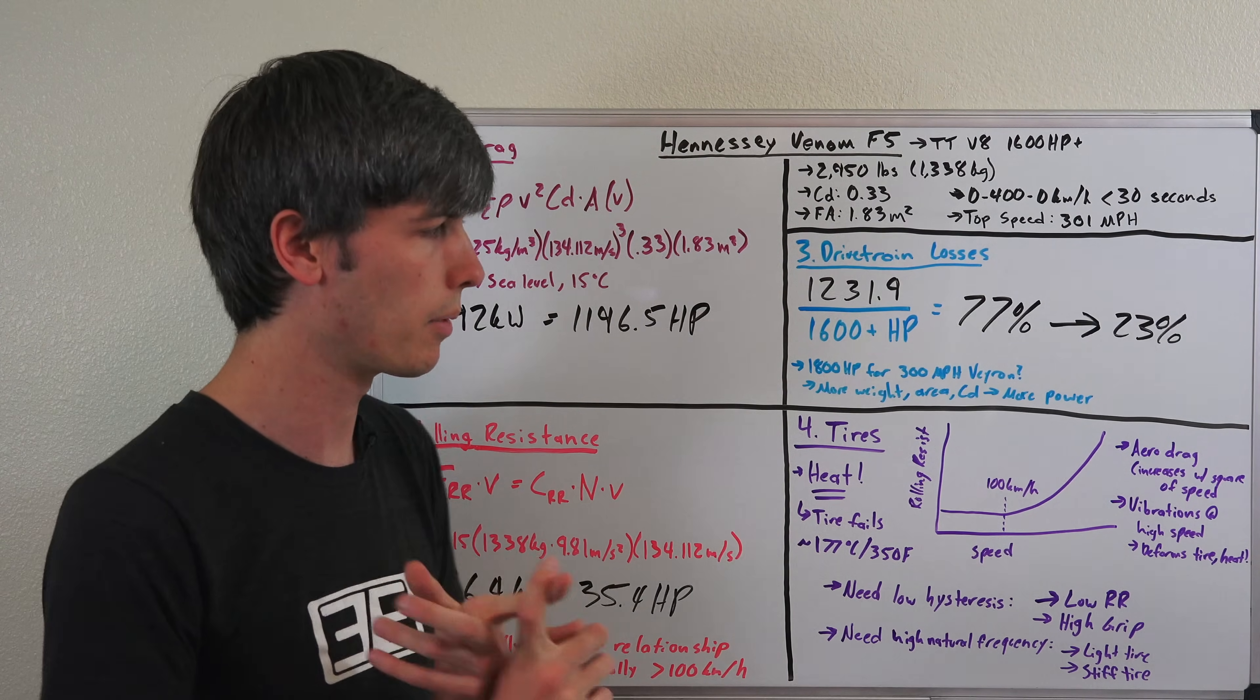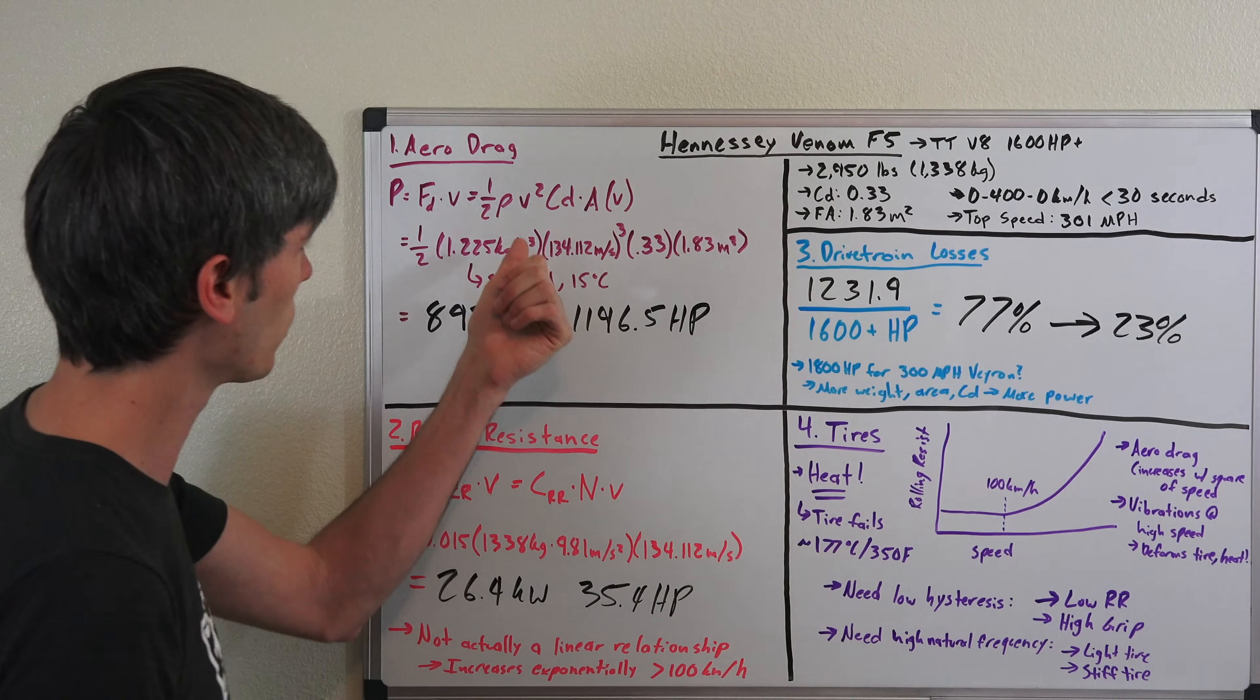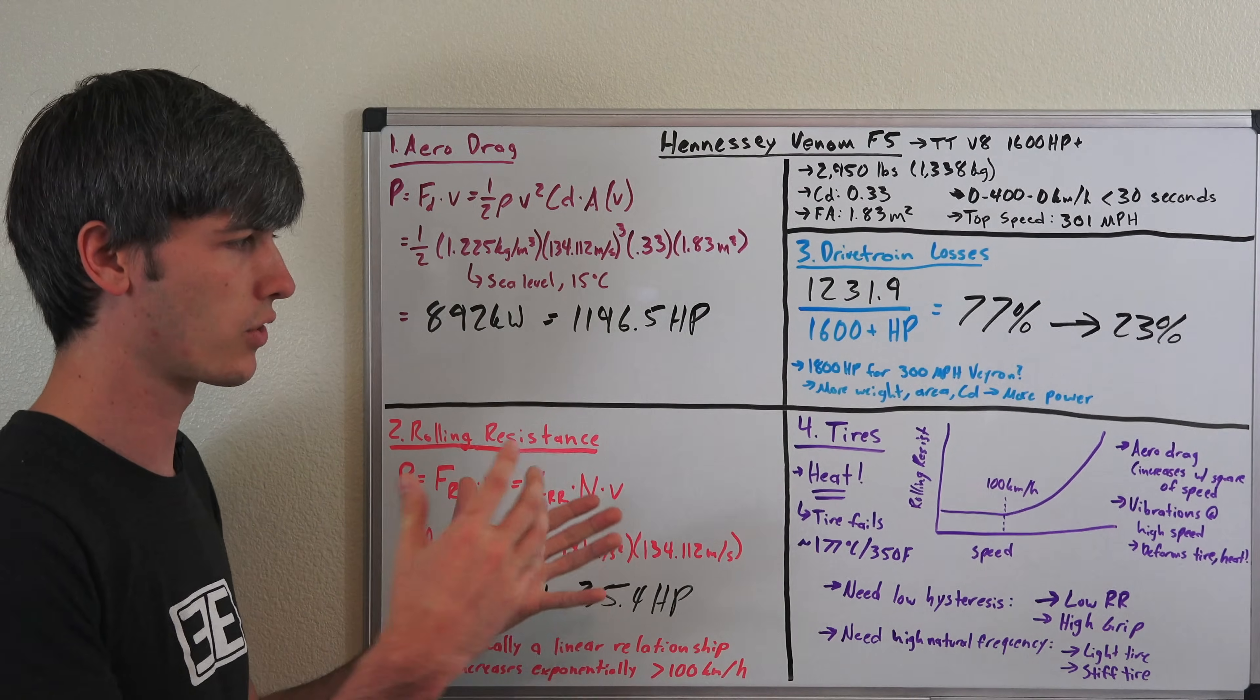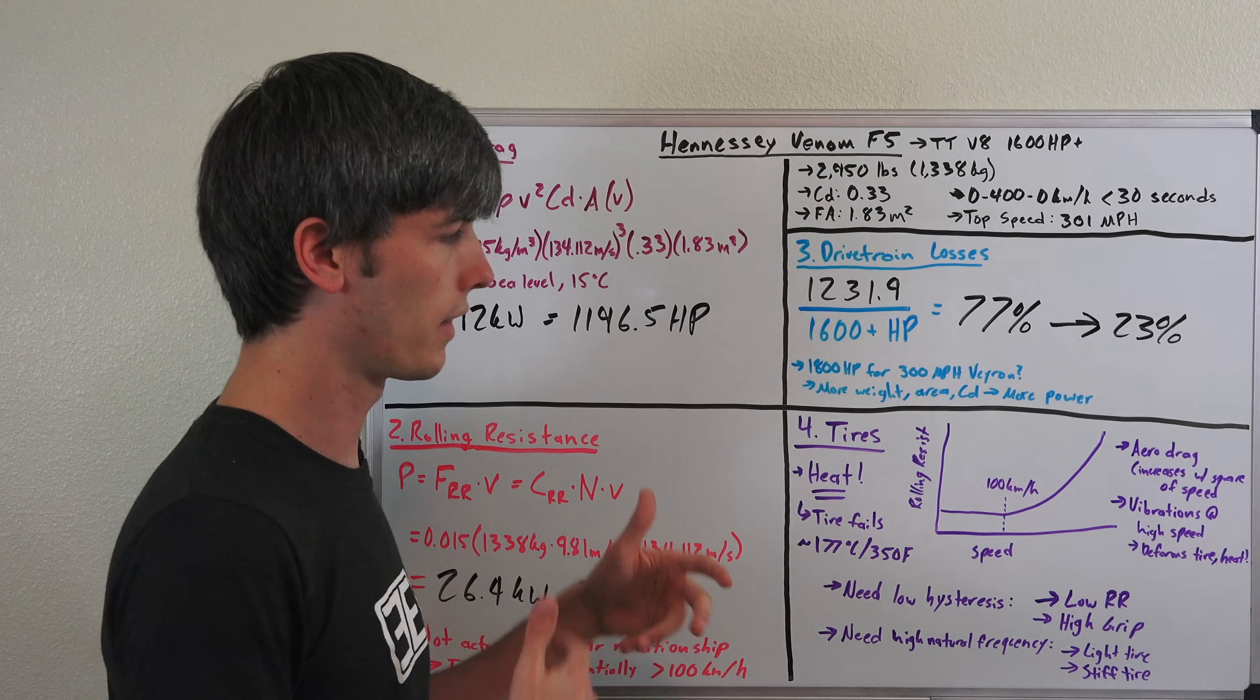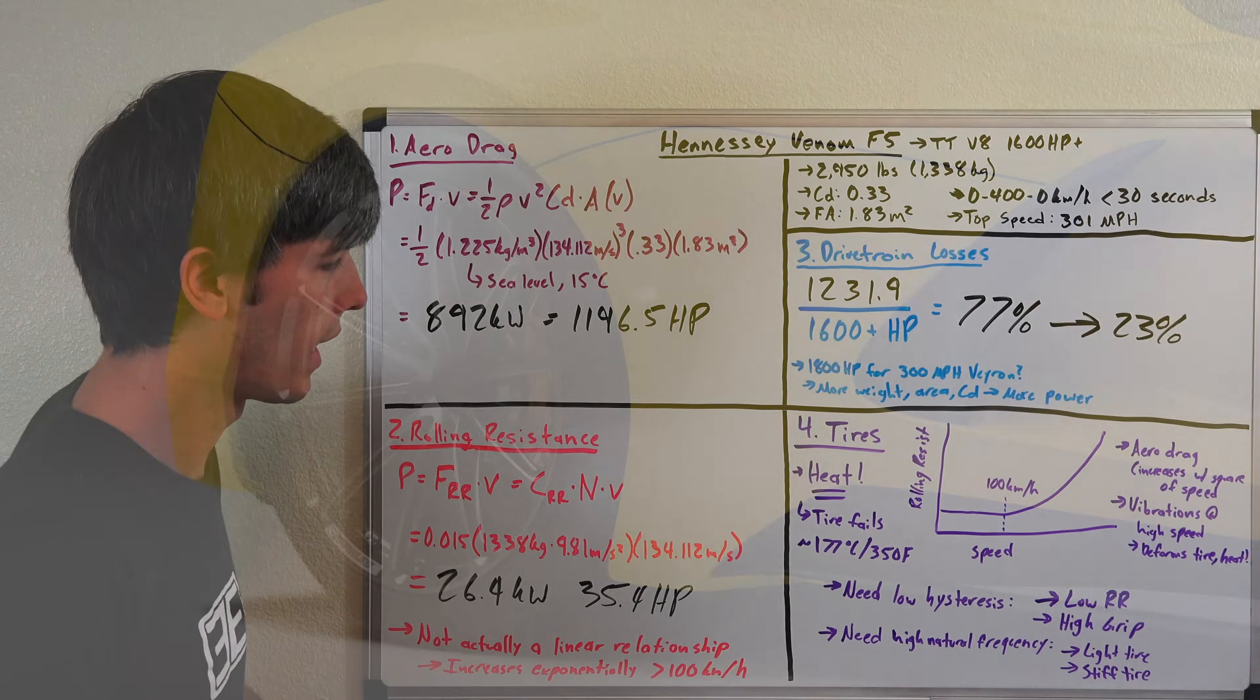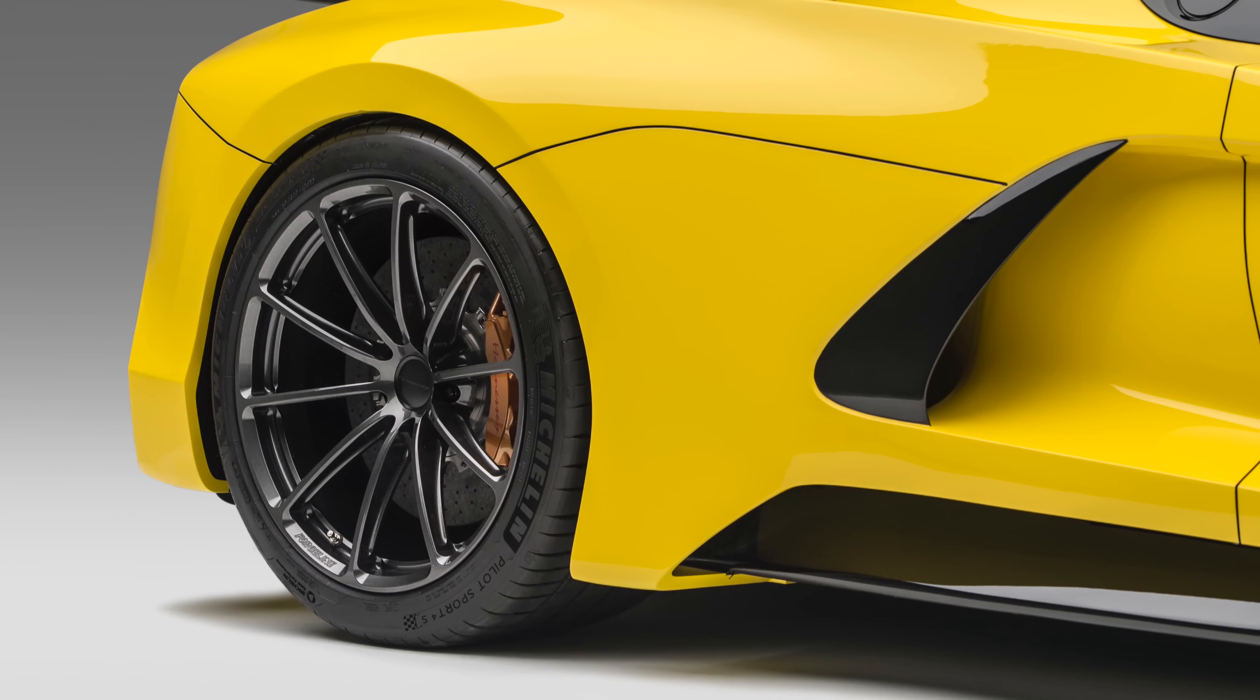This is because of aerodynamic drag, which of course increases with the square of speed as we learned from our earlier equation, and it's also because of the vibrations that occur at high speeds. That tire is now rotating at a faster speed, it deforms more, those deformations cause it to generate more heat.